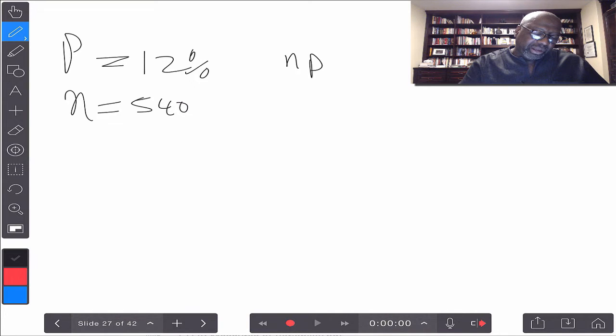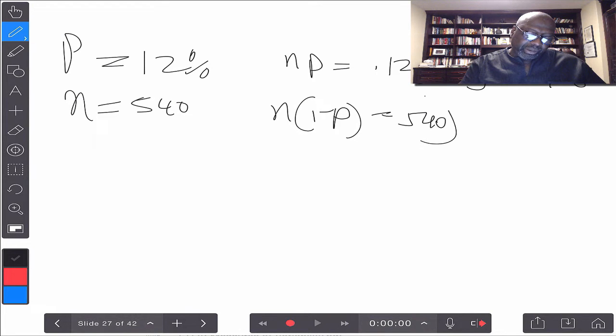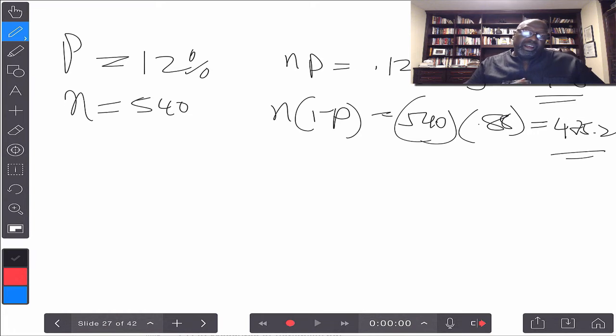NP would be 0.12 times 540. Let's see here, 0.12 times 540 is equal to 64.8. And then, if we take N times 1 minus P, that would be 540 times 0.88. 0.88 times 540 is 475.2. Clearly, that's greater than 5. This is greater than 5. And so, therefore,